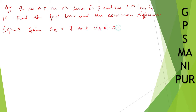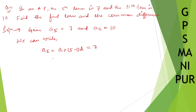We can write a₅ as a plus (5 minus 1)d equal to 7. So, a plus 4d is equal to 7. This is equation number one.